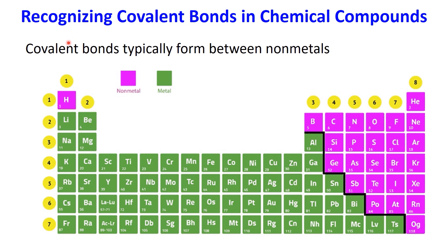Covalent bonds typically form between non-metals, which are found on the right-hand side of the periodic table, including elements like oxygen, nitrogen, fluorine, and carbon. Hydrogen, though located on the left side of the periodic table, behaves like a non-metal and also forms covalent bonds by sharing its single electron, as seen in H2 and H2O.